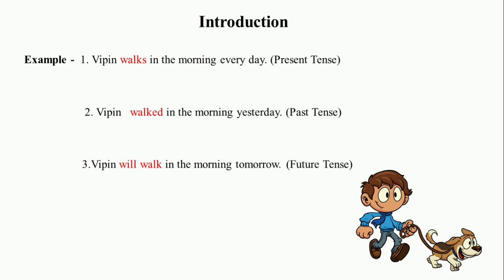Dear students, observe the examples written on the slide. First: Whippin walks in the morning every day. Second: Whippin walked in the morning yesterday. Third: Whippin will walk in the morning tomorrow. In the first sentence, the verb 'walks' refers to the action in the present time. In the second sentence, the verb 'walked' refers to the action in the past time. And in the third sentence, the verb 'will walk' refers to the action in the future time.